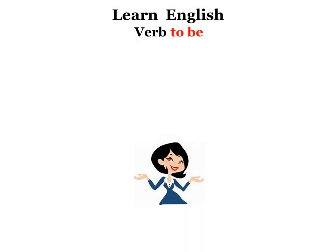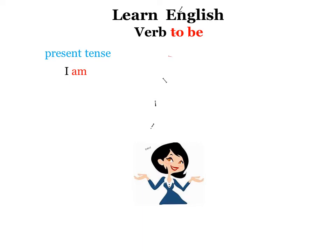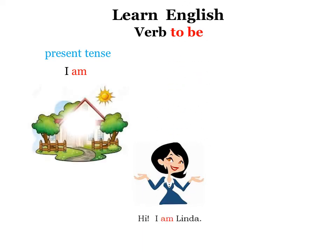Learn English. The verb to be. Present tense: I am. Hi, I am Linda. I am at home.